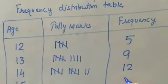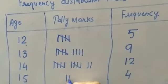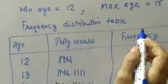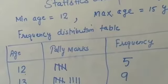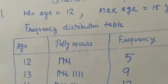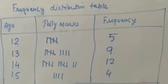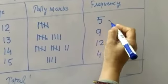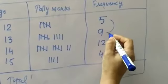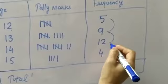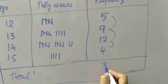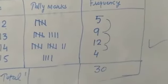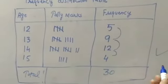For 15, check and you have made your frequency distribution table for the ages of 30 students. You can also total here to check: 5 plus 9 is 14, plus 12 is 26, plus 4 is 30. Final check the total. This is your frequency distribution of 30 students' ages.